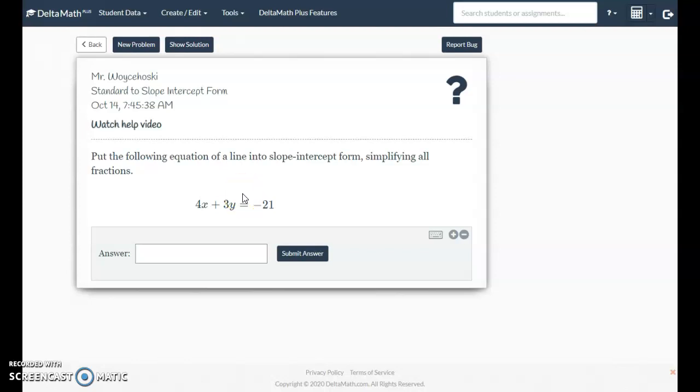So we're going to start with this first problem here. It says put the following equation of a line into slope-intercept form, simplifying all fractions. So the first equation is 4x plus 3y equals negative 21. Right now, this is what we call standard form. We're going to rearrange it into what we call slope-intercept form. Let's go ahead and flip over, and I'll meet you there.